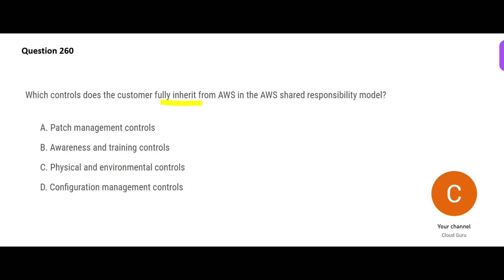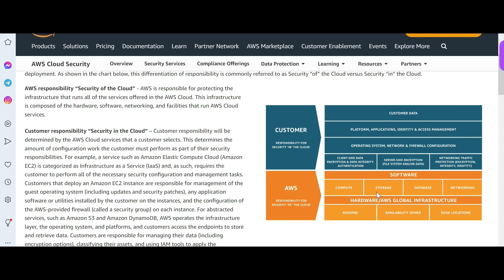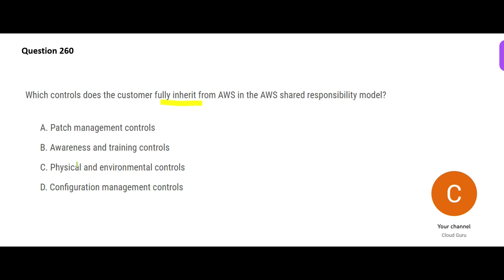Think of it like this: your father has a house and you are fully inheriting that house — your father built it and he is going to give it to you. Similarly, AWS does it and you are inheriting it. So this question is asking about the orange or amber responsibilities. The moment I see 'physical,' that means physically I could try to get into the AWS campus or data centers — but as a customer, AWS will never allow you in.